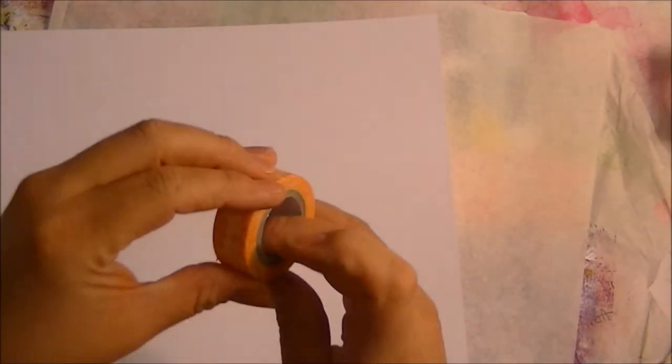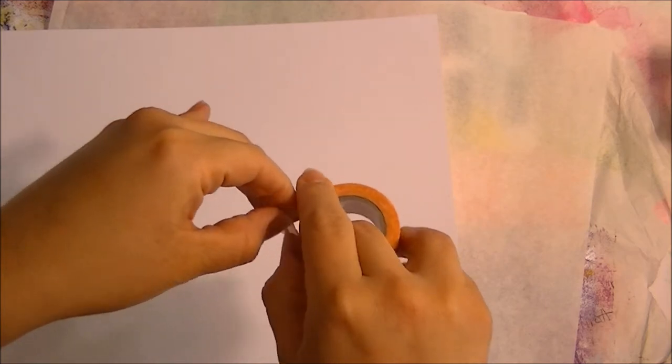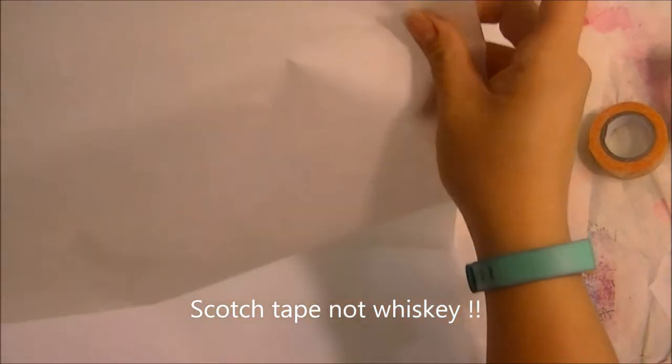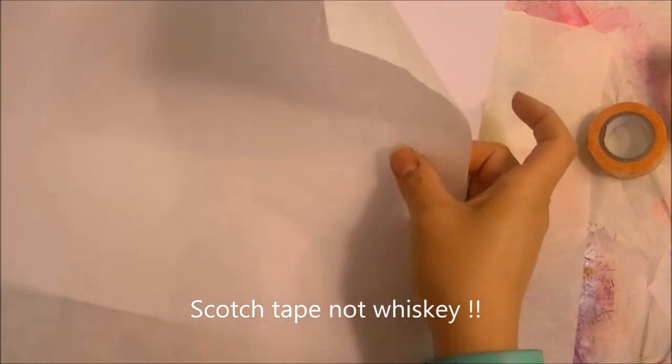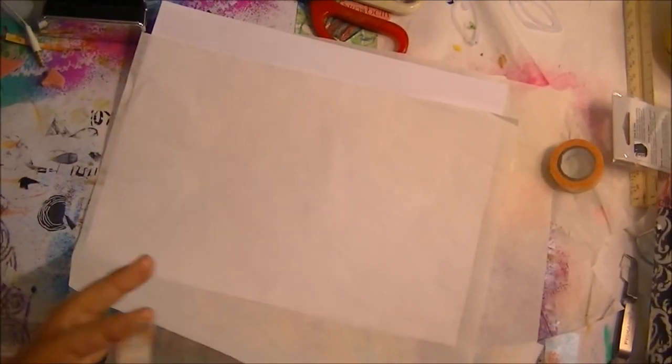I can't find the scotch tape so I'm just going to use washi tape. But what you actually do is you take the deli paper, make sure I'm in frame here, and you actually tape it onto the cardstock.